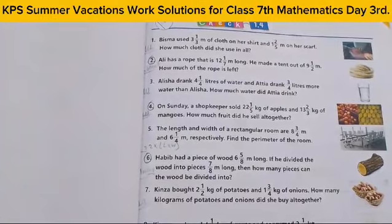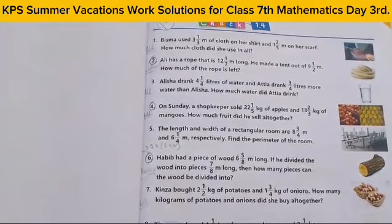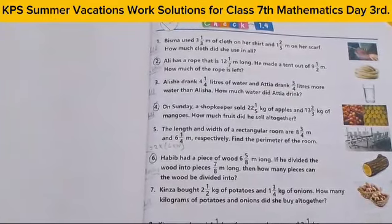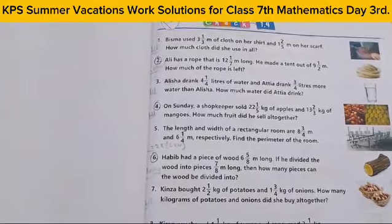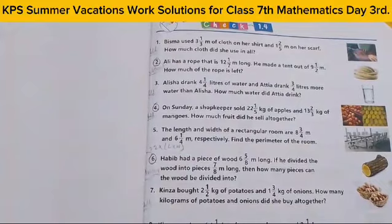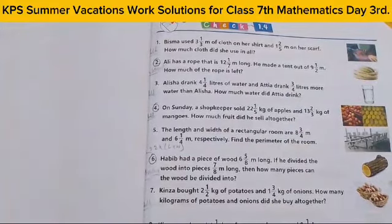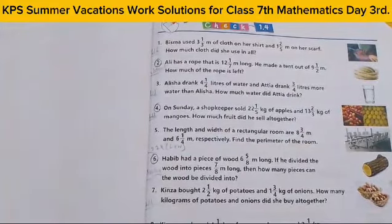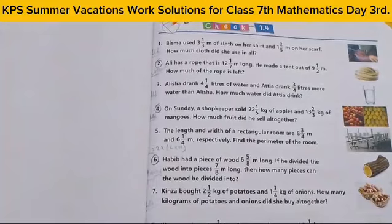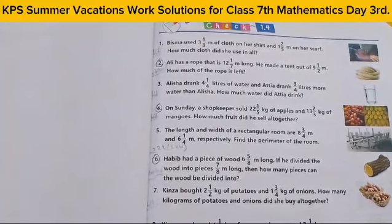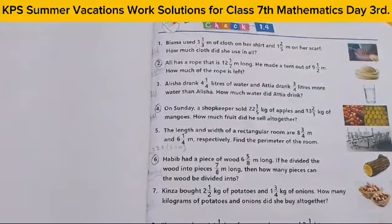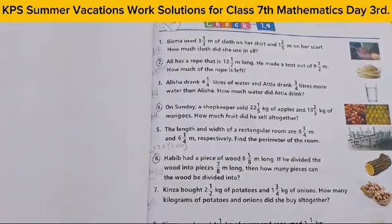Today what we need to do is exercise 1.4, question number 2. Ali has a rope that is 12 and 1/7 meter long. He made a tent out of 9 and 1/5 meter. How much rope is left?